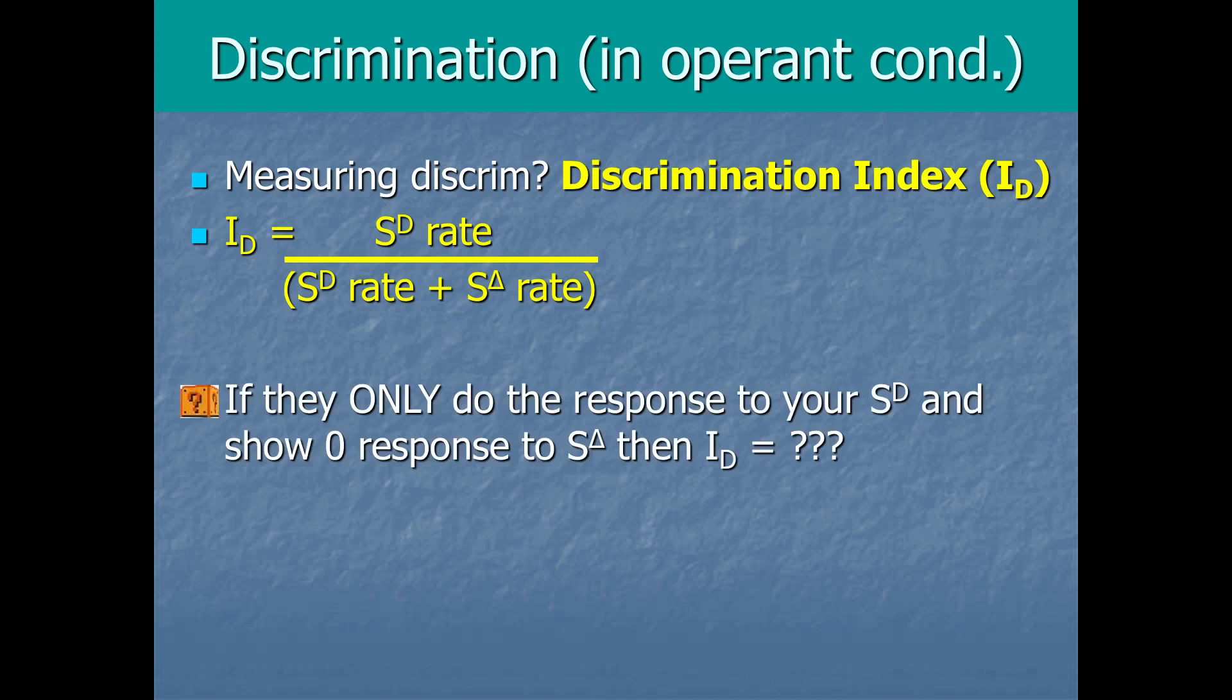Now, if they only do the response to your SD, the one that gets reinforced, and they show 0 responses to the S delta, the one where there's no reinforcement, then what's the discrimination index? What does the ID come out to? Pause the video a moment and try to answer this one. Well, since S delta is 0, right, you can just plug a 0 in here. You kind of take that out of the equation. You see that it's SD, whatever the rate was, over SD. Anything divided by itself always comes out to 1. So the discrimination index here is 1 if they don't respond to the S delta at all. That would actually be perfect discrimination, right? They're perfect at telling apart when to respond or not based on the stimuli that are present. They only respond when the SD is there. In other words, the stimuli have perfect control over the behavior. Perfectly predict what the person or animal will do.